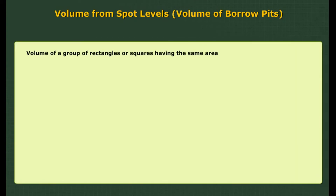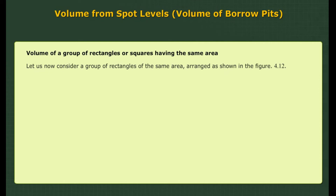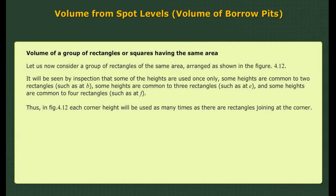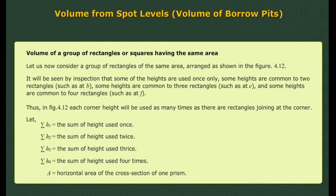Determination of volume of a group of rectangles or squares having the same area: Consider a group of rectangles of the same area arranged as shown. Some heights are used only once, some are common to two rectangles such as at B, some are common to three rectangles such as at E, and some are common to four rectangles such as at F. Thus H1 equals the sum of heights used once, H2 equals the sum of heights used twice, H3 equals the sum of heights used thrice, H4 equals the sum of heights used four times, and A is the horizontal area of the cross section of one prism. The total volume is then computed accordingly.